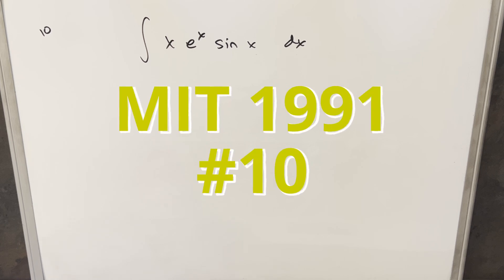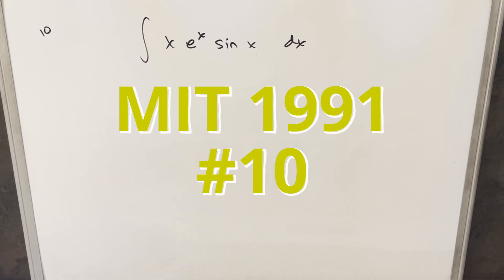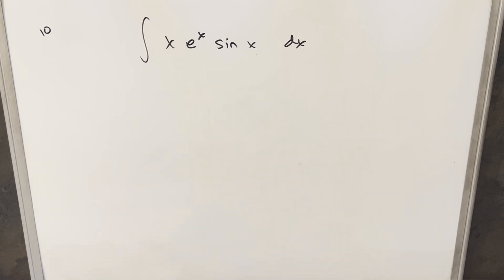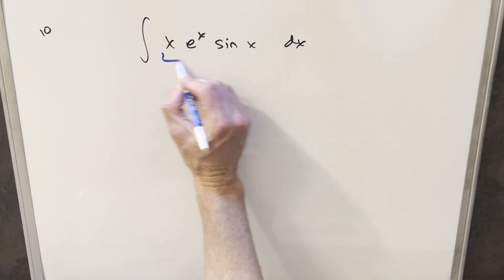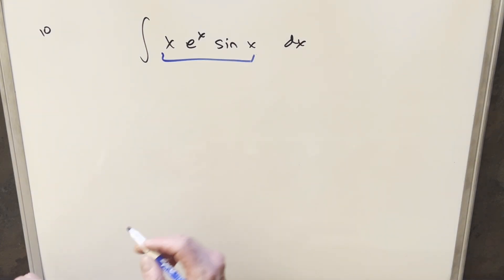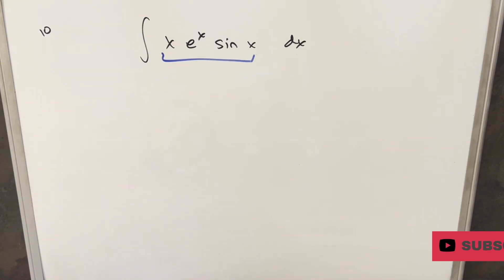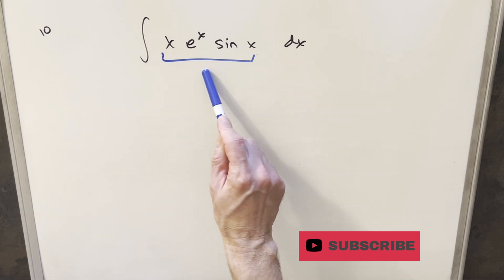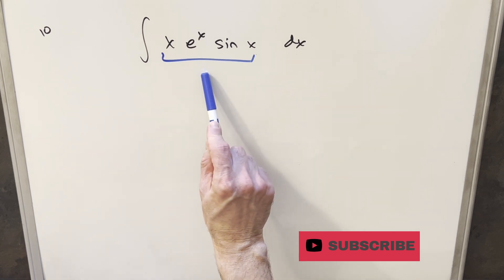We have here today a really interesting integral. This one's from the MIT Integration Bee, but this was from 1991, problem 10. We have the integral of x, e to the x, sine x. Right away the thing that really jumps out is it looks like we want to use integration by parts, but the tricky thing is we have three functions.